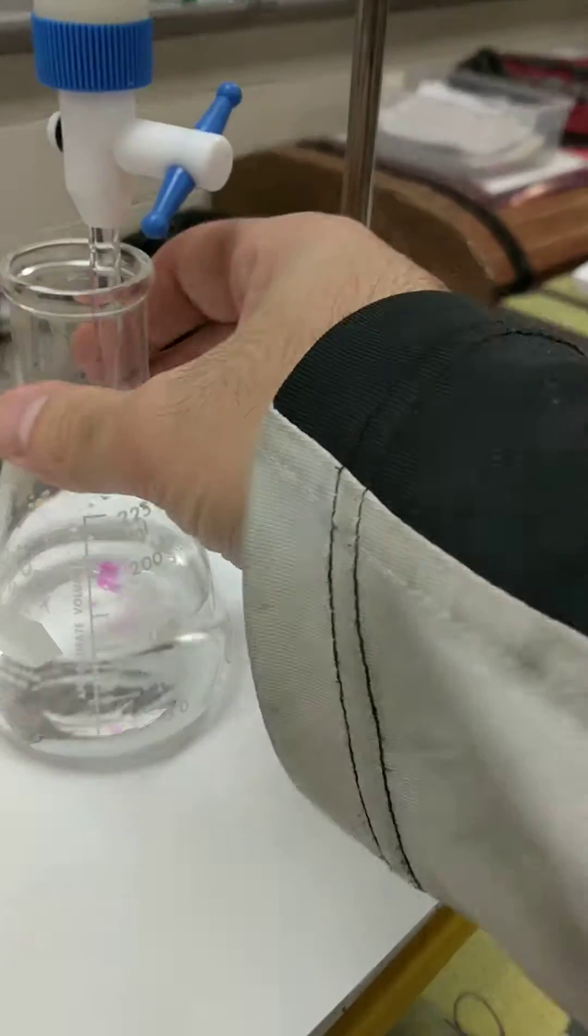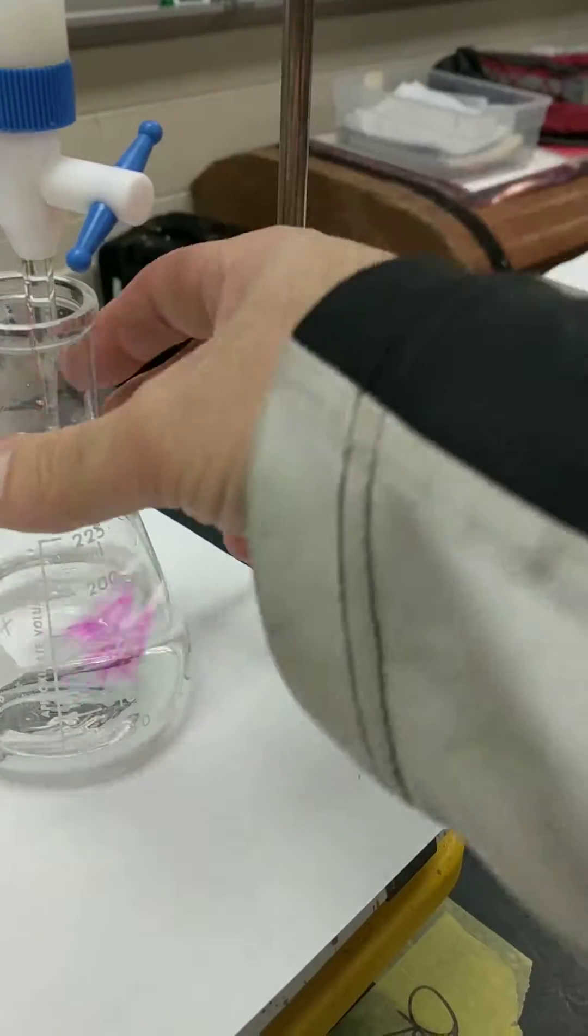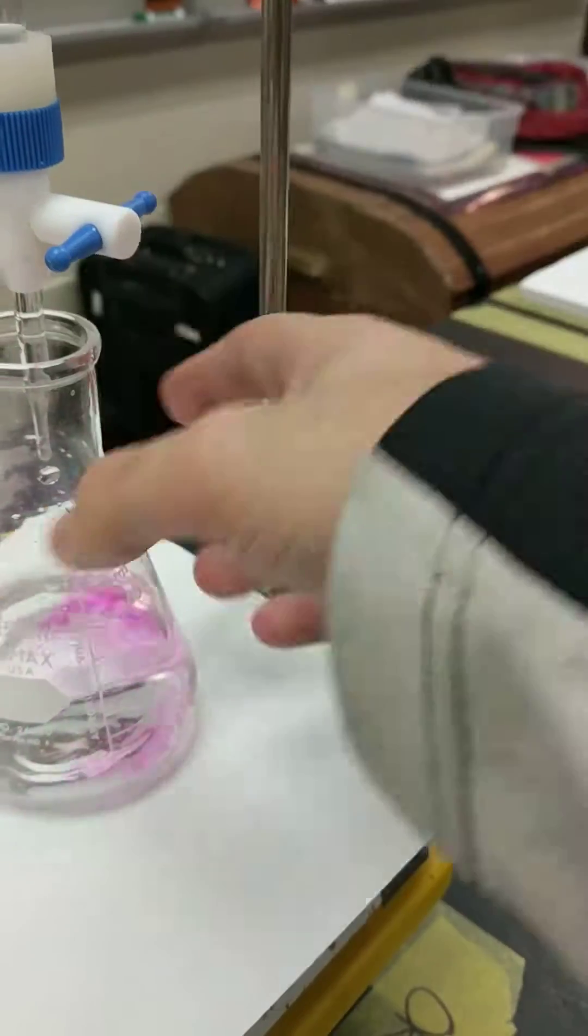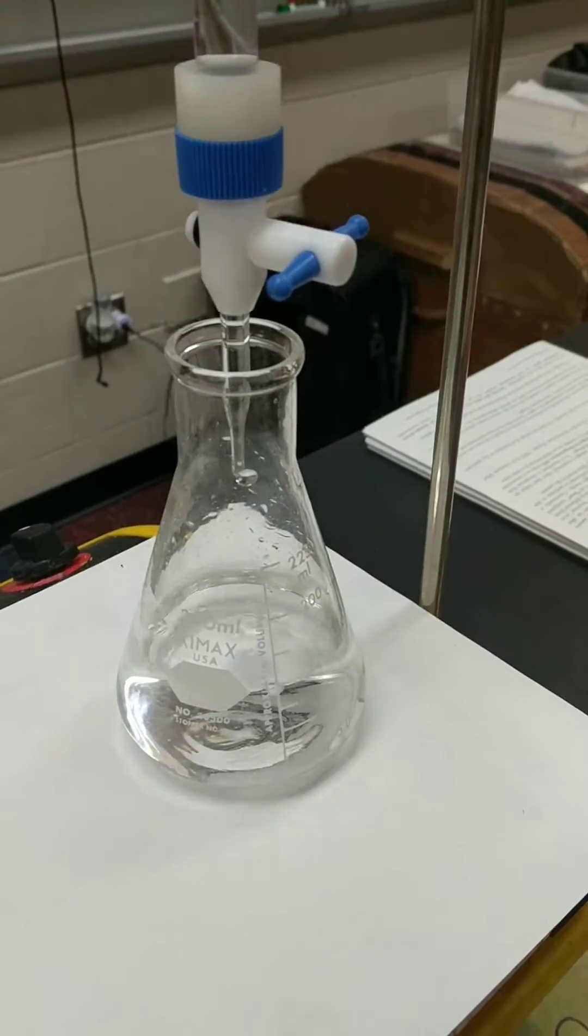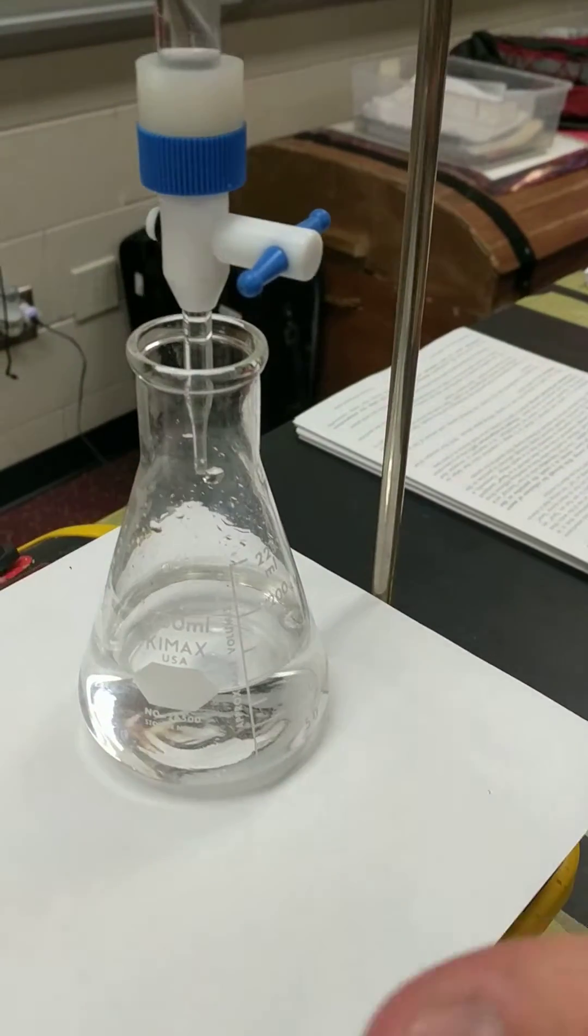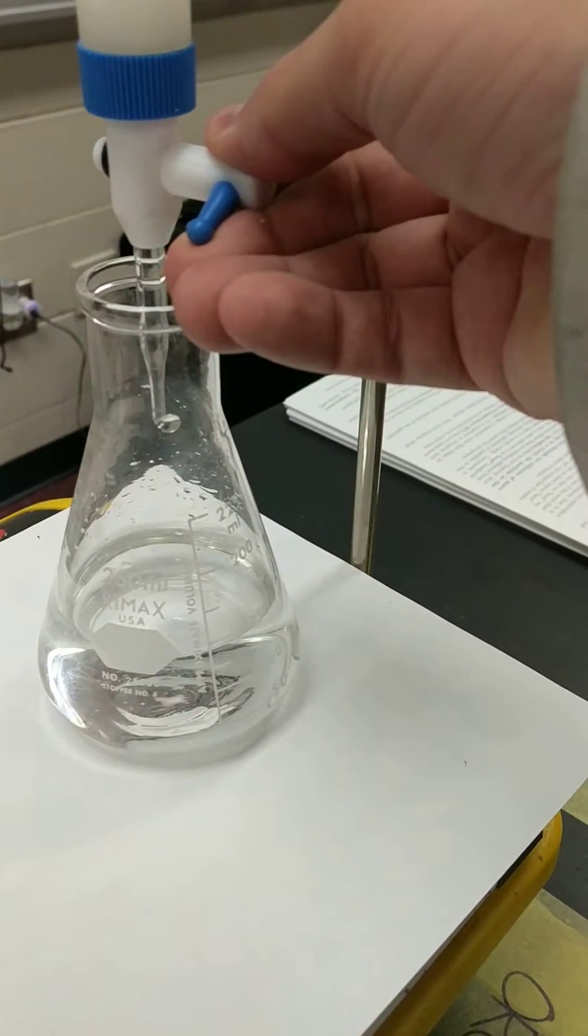So I'm going to do one, almost there, two, almost there, three, four, five, six, seven, eight, right? Look at the pink color, pink color, it goes away. That means I'm not at the endpoint yet, but it's getting there, because the pink color is lasting a little bit longer.